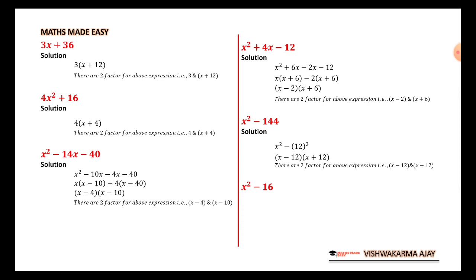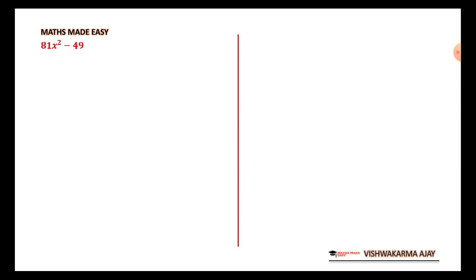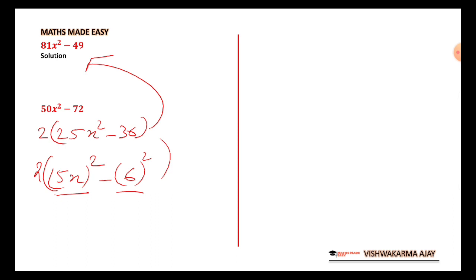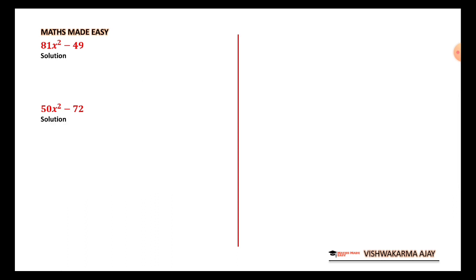x² - 16: you should be able to solve this using the same method, so I'm going to skip it. Similarly, 81x² - 49 can be written as (9x)² - 7², and you know what to do. For 50x² - 72, take 2 as a common factor to get 2(25x² - 36), then write it as 2[(5x)² - 6²] and apply the difference of squares formula a² - b² = (a - b)(a + b).